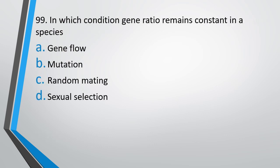Question number 99. In which of the following conditions, gene ratio remains constant in a species? Gene flow, mutation, random mating, sexual selection? The correct answer is Option C in random mating.